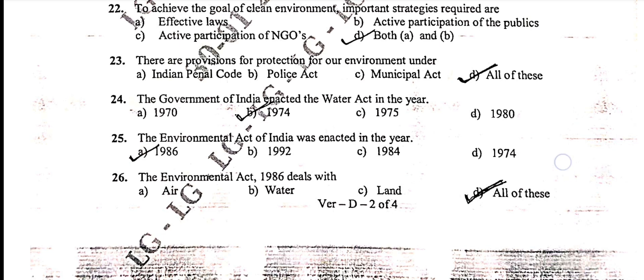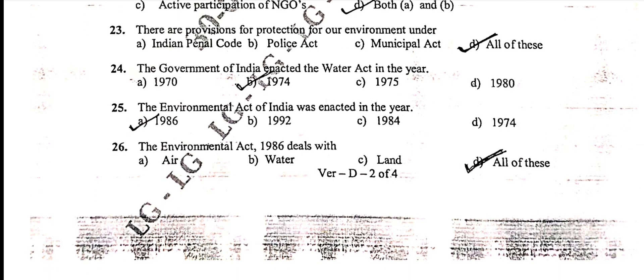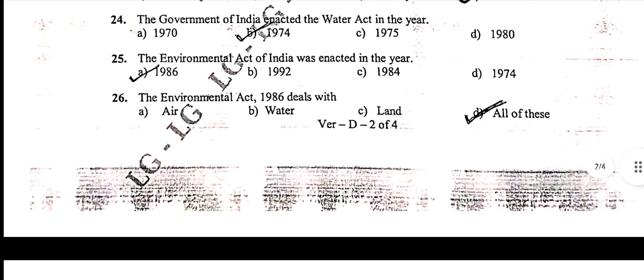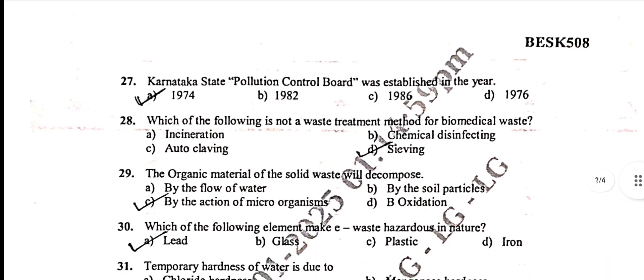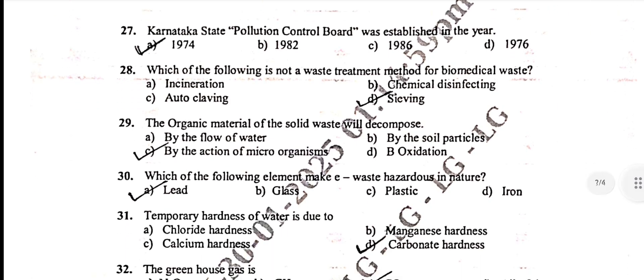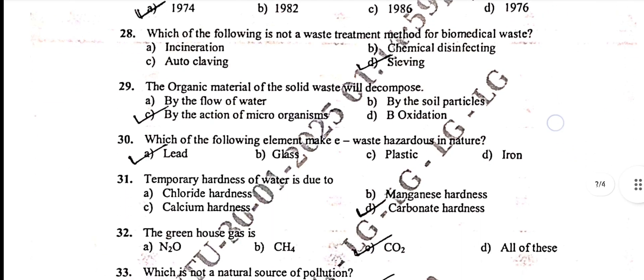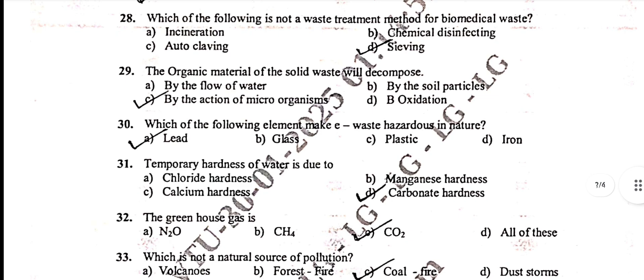Twenty-third: all of these. Twenty-fourth: B — 1974. Twenty-fifth: 1986, option A. Twenty-sixth: option D — all of these. Twenty-seventh: option A — 1974. Twenty-eighth: slaving, option D. Twenty-ninth: C — by the action of microorganisms.